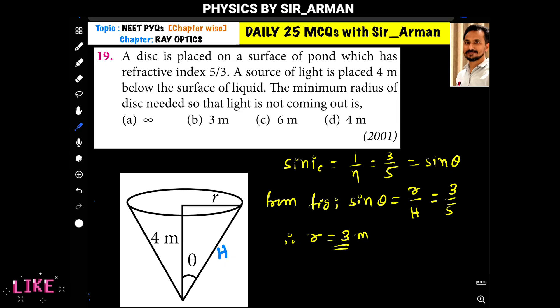A disk is placed on a surface of a pond which has refractive index 5 by 3. A source of light is placed 4 meter below the surface of liquid. The minimum radius of the disk needed so that light is not coming out.